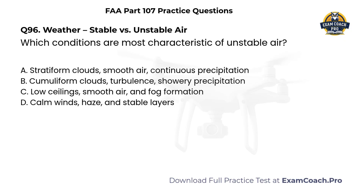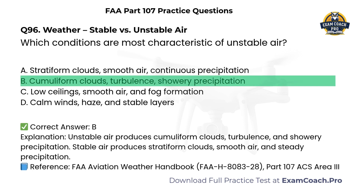Weather. Stable versus unstable air. Which conditions are most characteristic of unstable air? A. Stratiform clouds, smooth air, continuous precipitation. B. Cumuliform clouds, turbulence, showery precipitation. D. Calm winds, haze, and stable layers. Correct answer: B. Unstable air produces cumuliform clouds, turbulence, and showery precipitation.